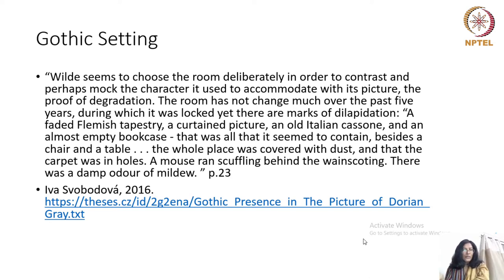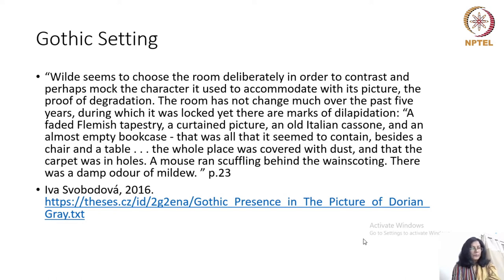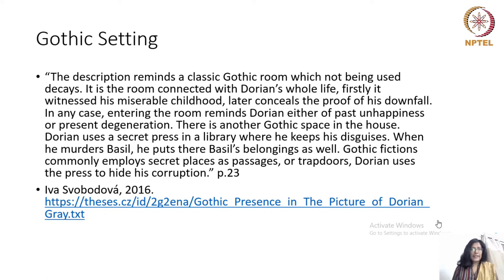There are references to mildew and a mouse running behind the wainscoting — that is, the paneling along the bottom of the walls. A schoolroom is usually associated with innocence, but now that innocence has been corrupted by the behavior of Dorian Gray. The description reminds us of a classic Gothic room. The room is connected with Dorian's whole life: it witnessed his miserable childhood and later conceals the proof of his downfall. Entering the room reminds Dorian of either past unhappiness or present degeneration.